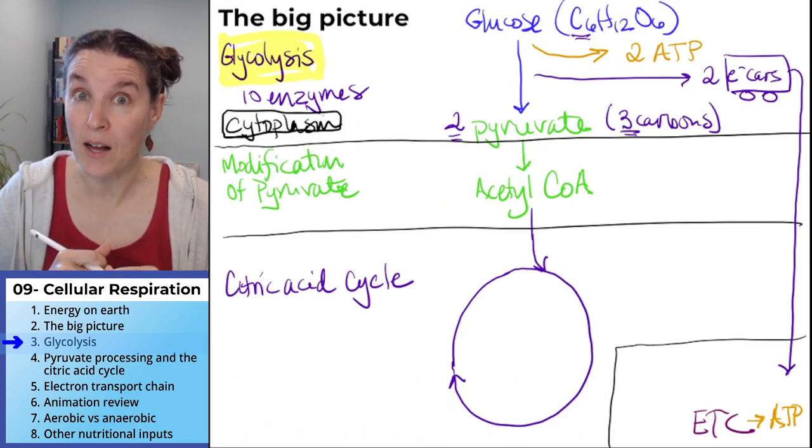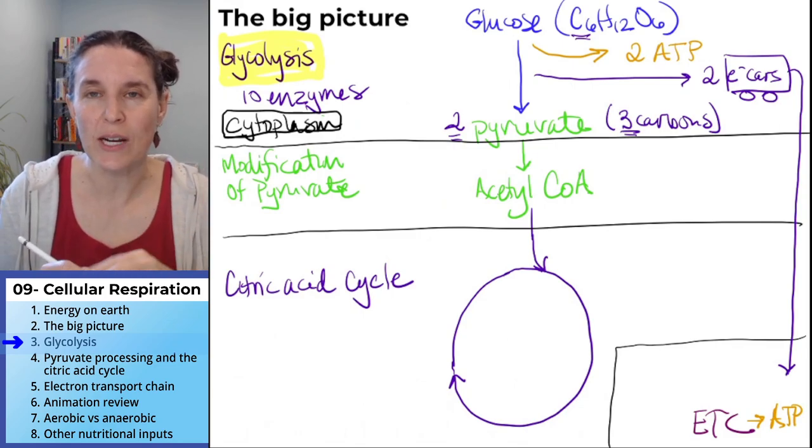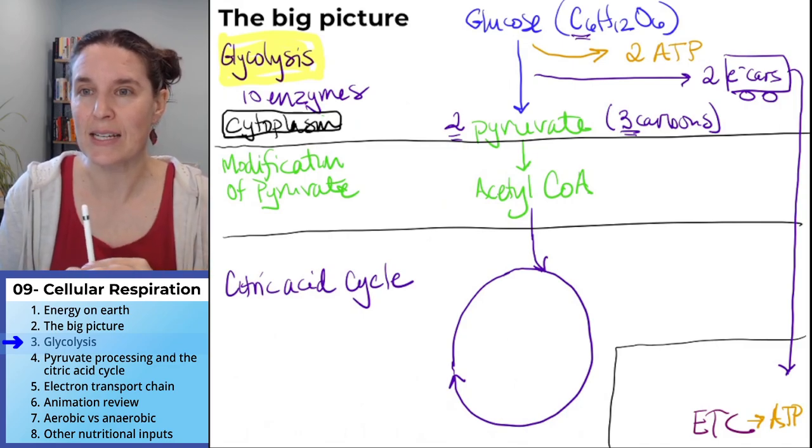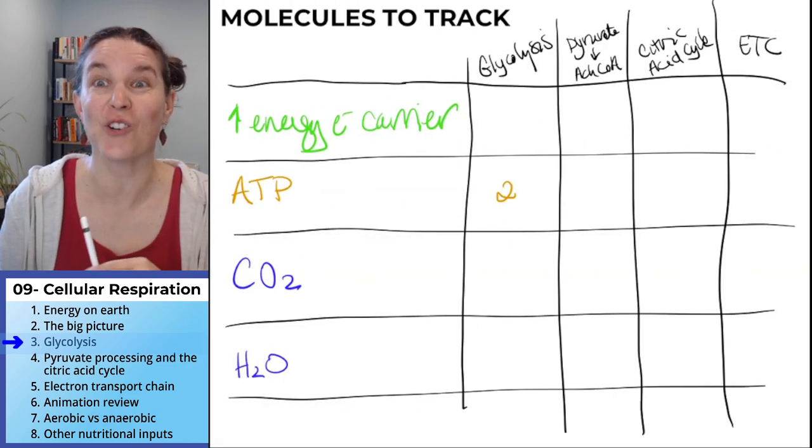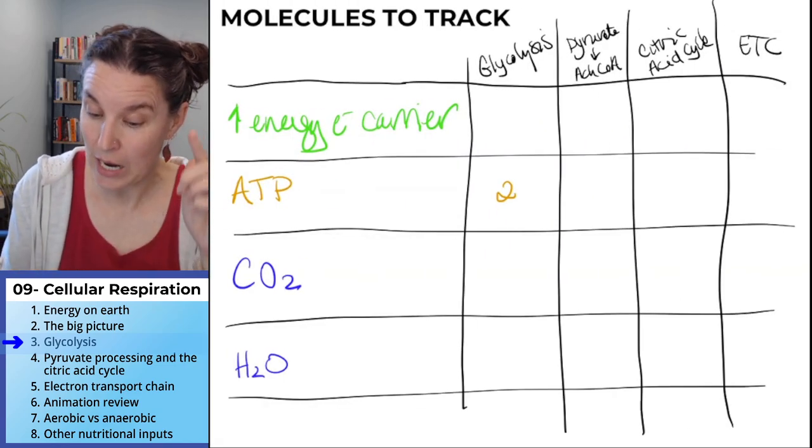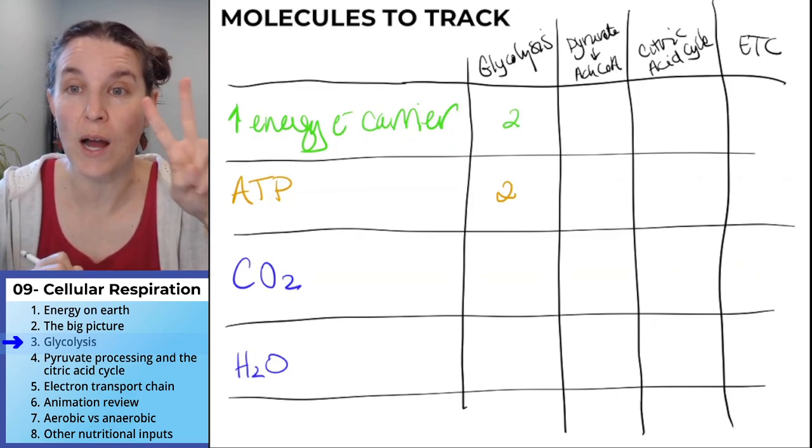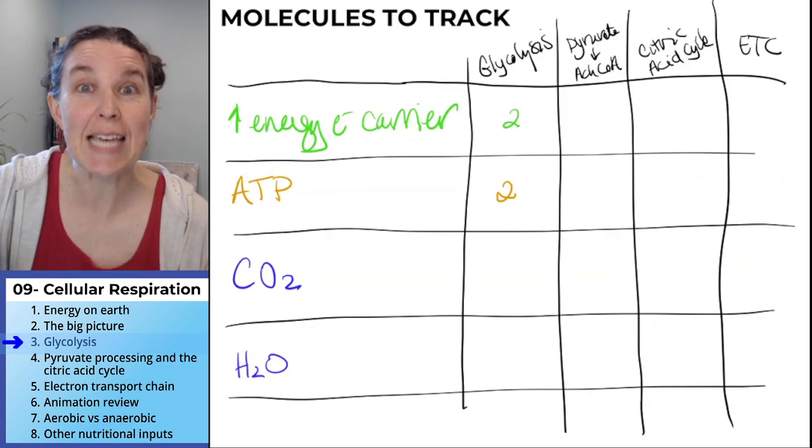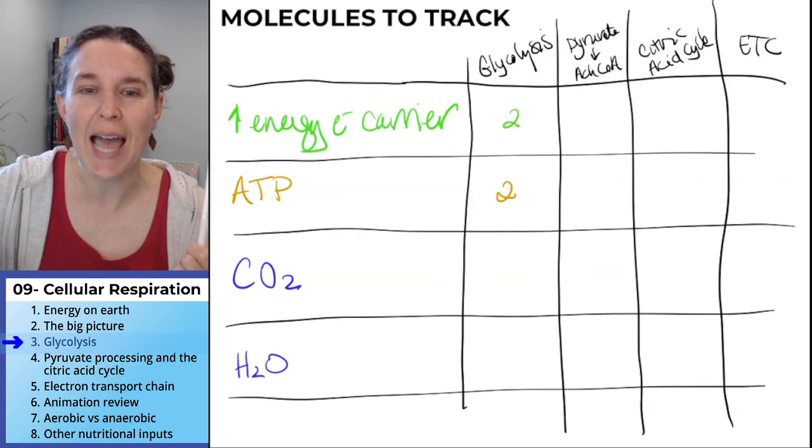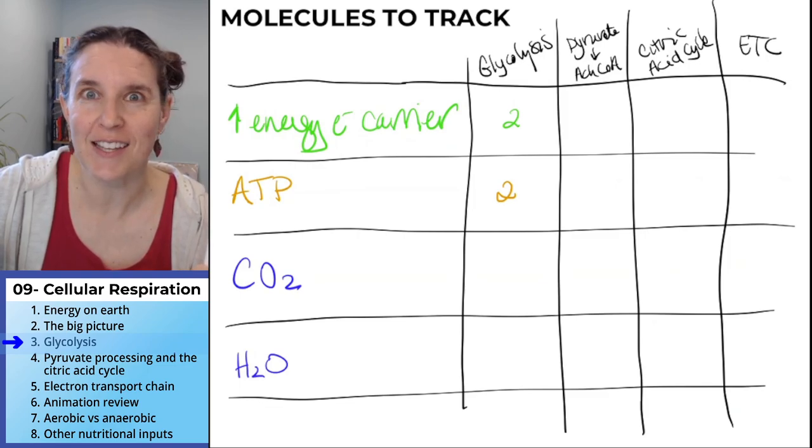I think that's everything that I want to tell you about glycolysis. I'm going to do the modification of pyruvate and the citric acid cycle together in the next section. I'm not done because what did I just remember that we need to do? We need to complete our chart. Knowing that from glycolysis we got two high energy electron carriers. We got some carriers from glycolysis, yes. Okay, let's go see how many carriers and cool things we get out of pyruvate modification and citric acid cycle.